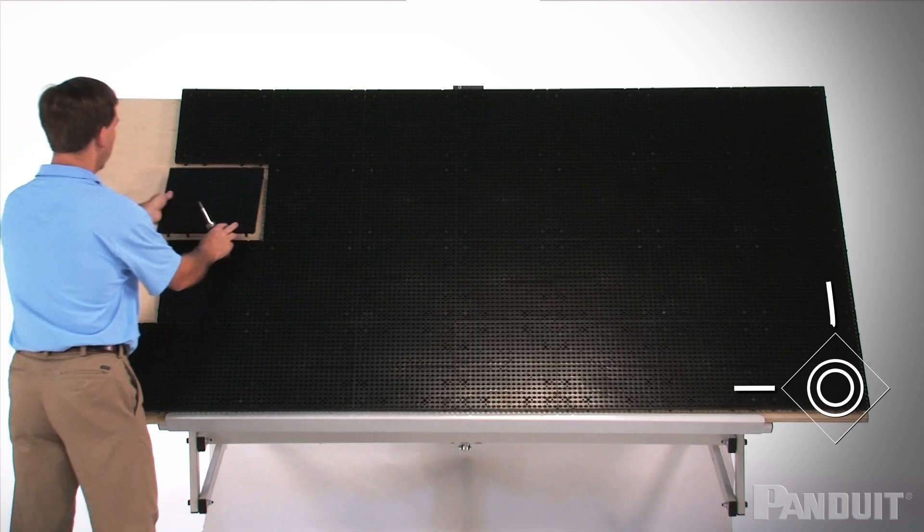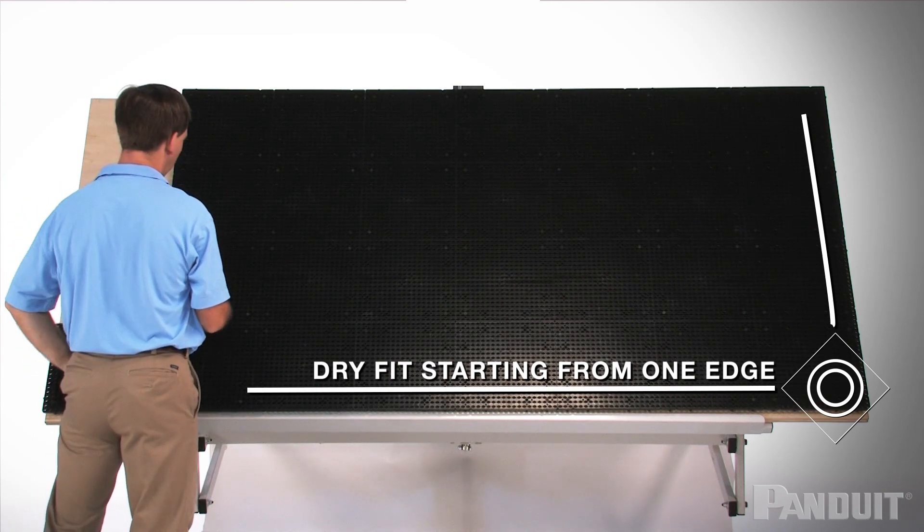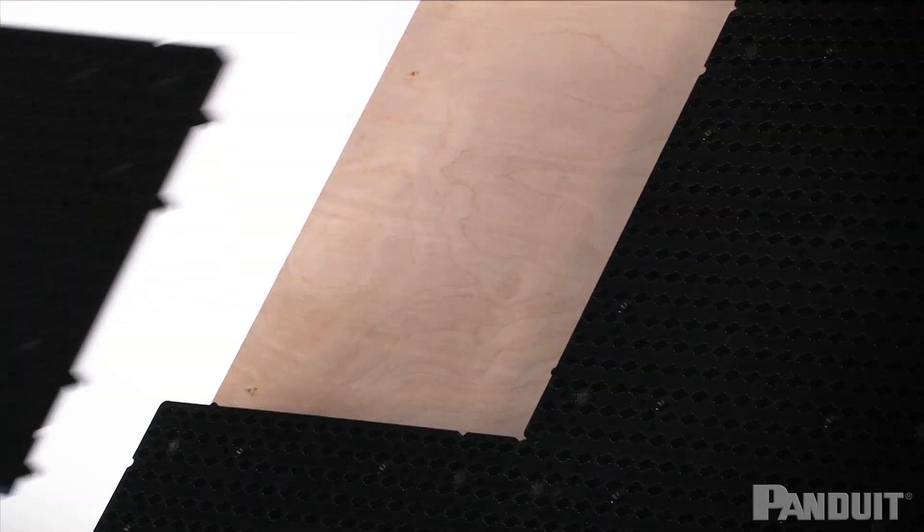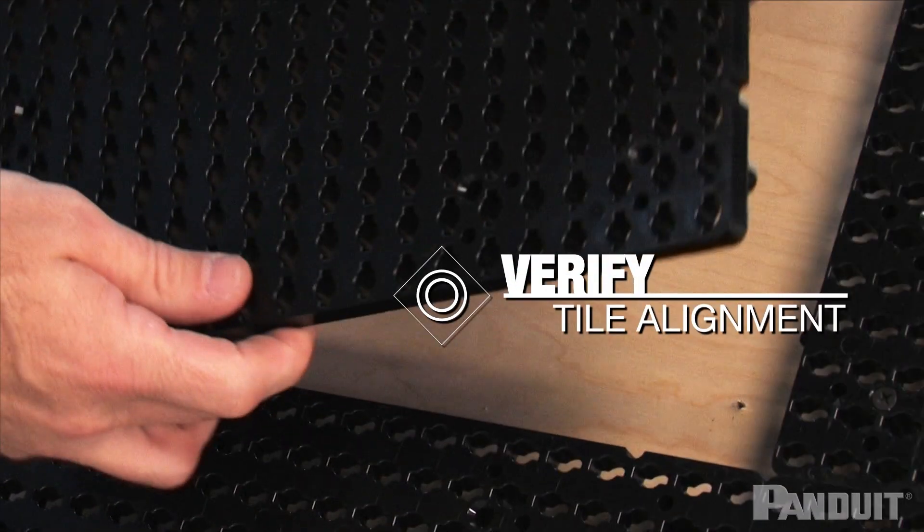I might also recommend installing the tiles starting in one corner of the plywood and dry fitting them along one edge. You can then work your way across the plywood to verify that the tiles are appropriately aligned.